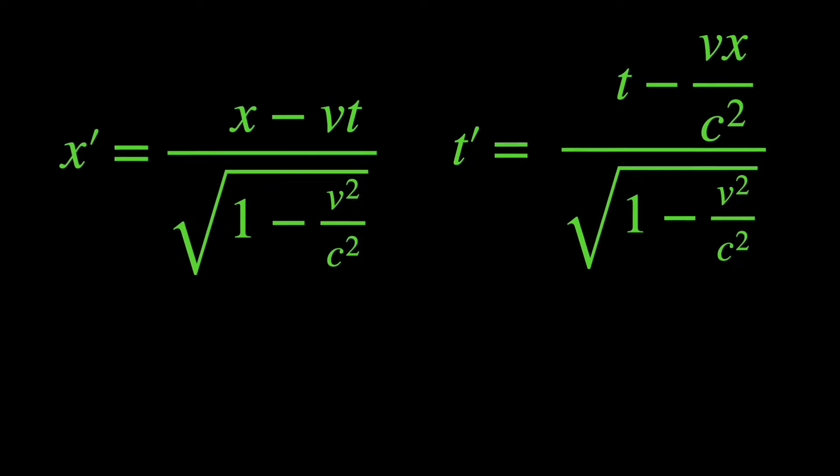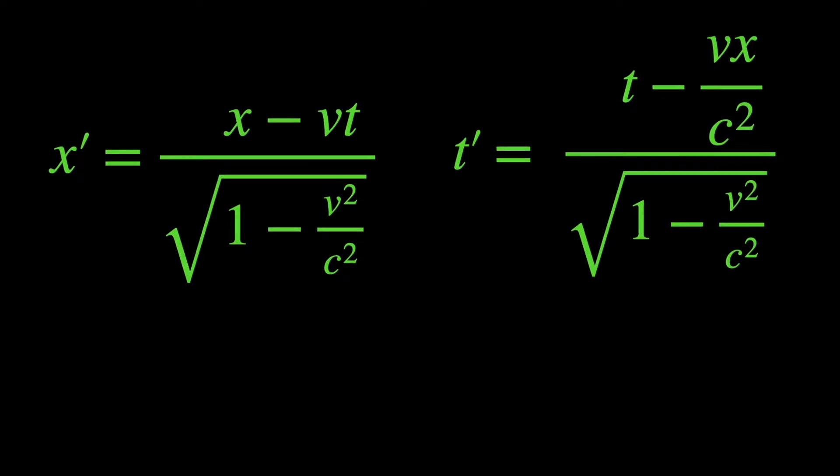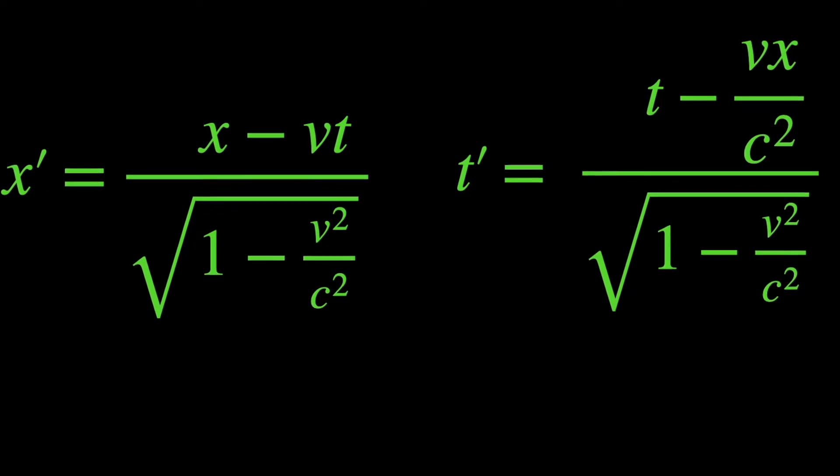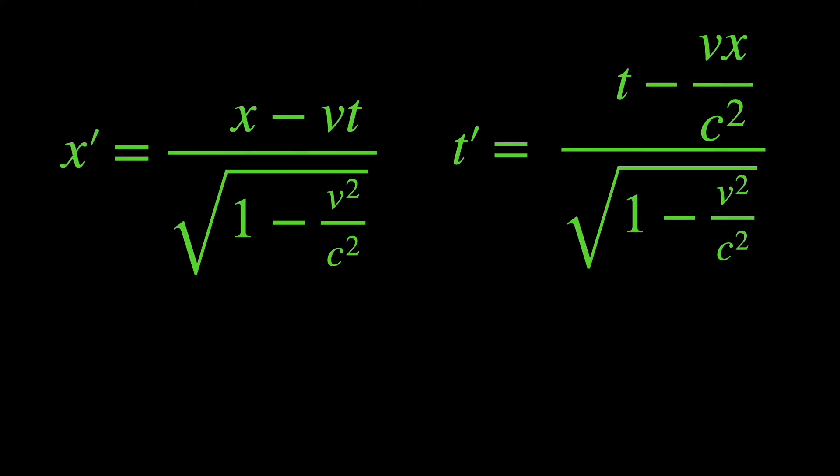Turns out that we need to use the Lorentz transformation equations carefully in a specific manner. If we do it wrong, well, you will see what happens. But before we begin, let me introduce the Lorentz factor gamma, which is just the inverse of the square root appearing in the denominator of the Lorentz transformation equations to make them look a little less cumbersome.